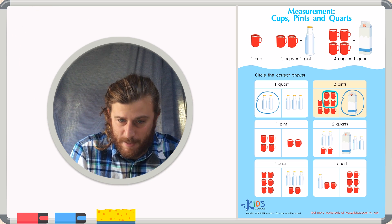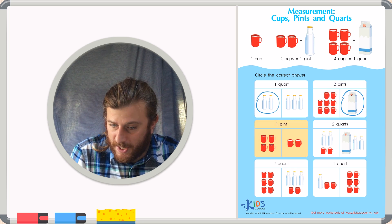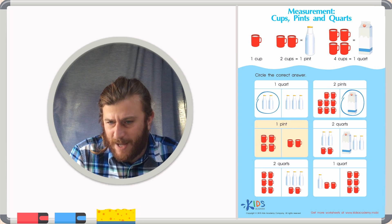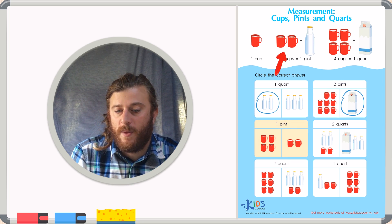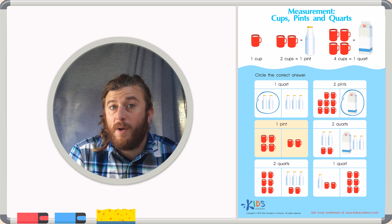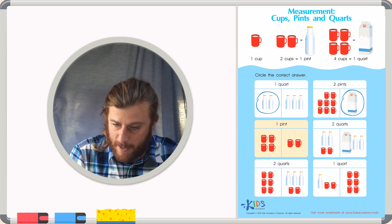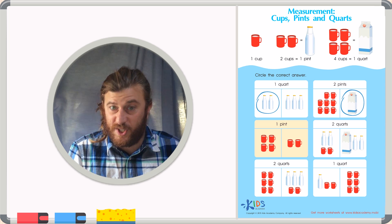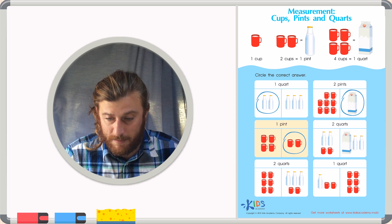Let's take a look at our next example. One pint. Well, this one's represented right here in the picture. We can see that one pint is equivalent to two cups. So we can just go ahead and circle two cups right there.